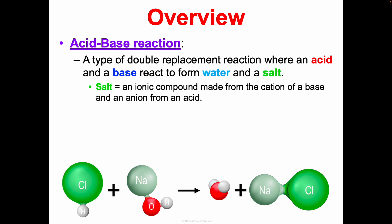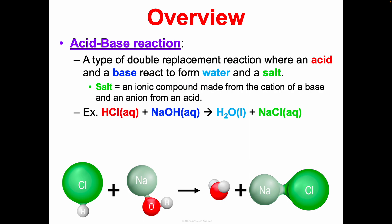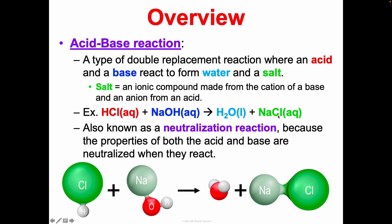That salt is an ionic compound made from the cation of the base and an anion from the acid. We looked at this example — I have the acid color coded and we've got our base here making water and that salt. These are also known as neutralization reactions because the properties of both the acid and the base are neutralized when they react.